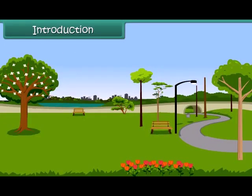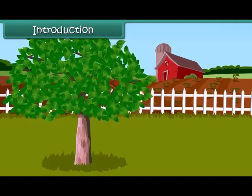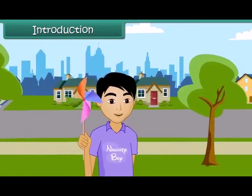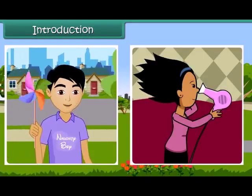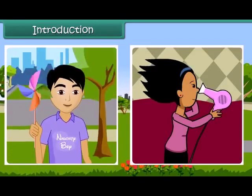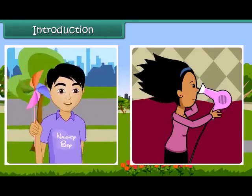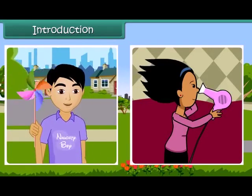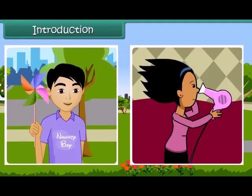Dear friends, do you have any idea as to how a kite flies? How do the leaves of a tree move? Or have you ever played with a paper windmill? How does this happen? Friends, this happens due to the movement of air. Air is present everywhere around us and we can feel it.